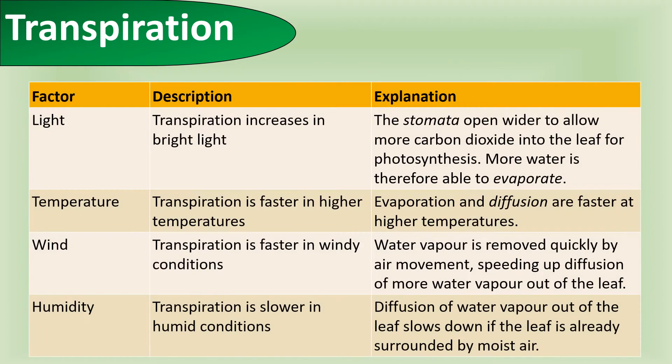There are a range of different factors that affect transpiration. Light: transpiration is increased by bright light because the stomata open wider and allow more carbon dioxide into the leaf for photosynthesis. Because the stomata open wider, more water will evaporate. Temperature causes transpiration to happen faster because high temperatures cause a greater rate of evaporation. More water will diffuse out of the leaves at higher temperature.